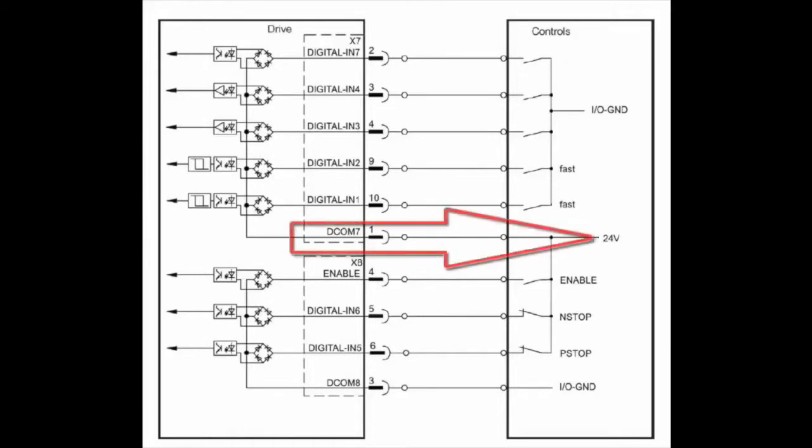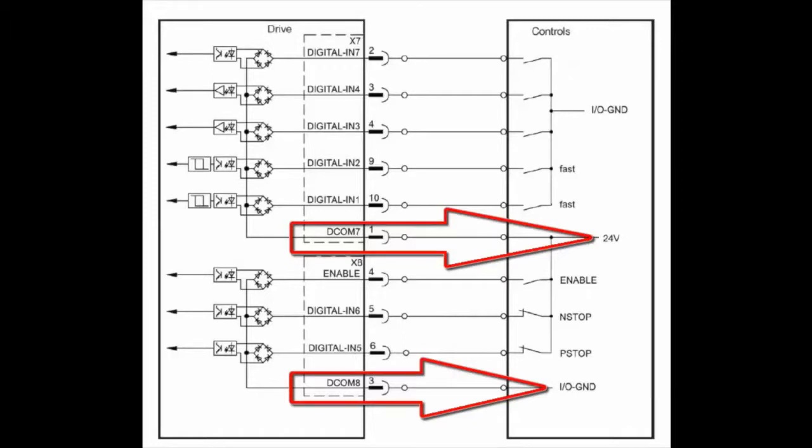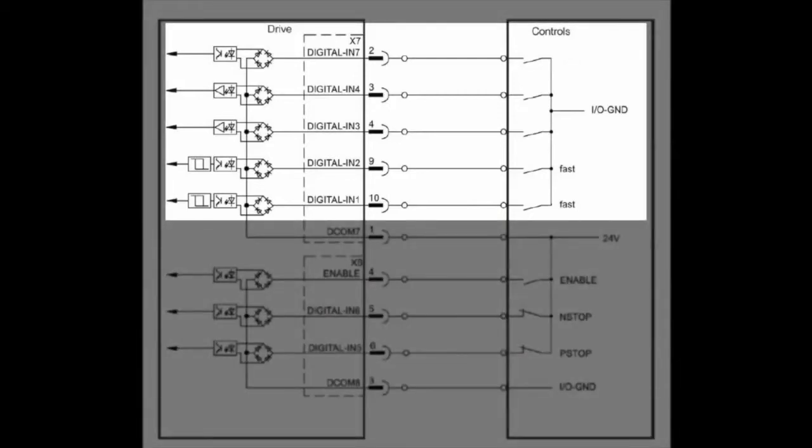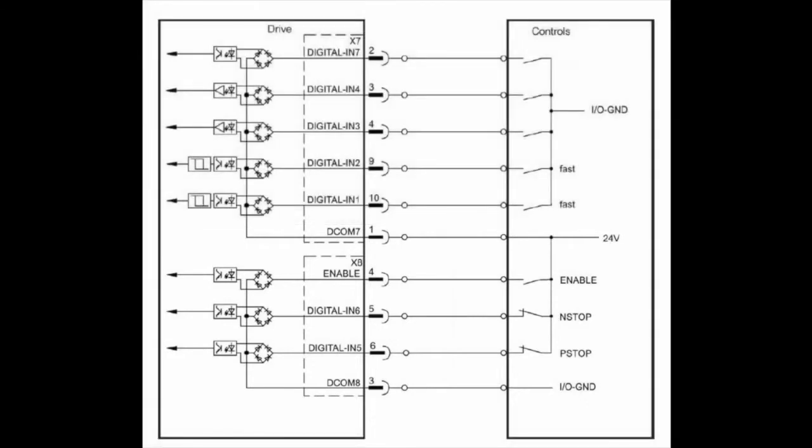In this scenario, X7 pin 1 will be connected to the positive side and X8 pin 3 will be connected to the negative side. All of the inputs going into X7 will need to be connected to the negative side, and all of the inputs going into X8 will need to be connected to the positive side.